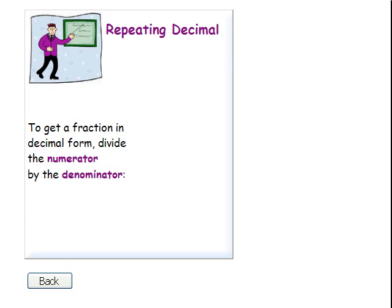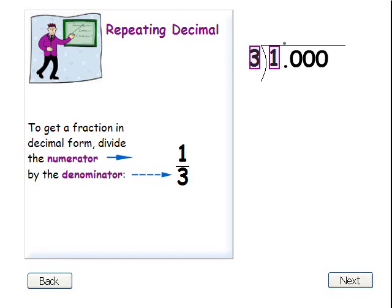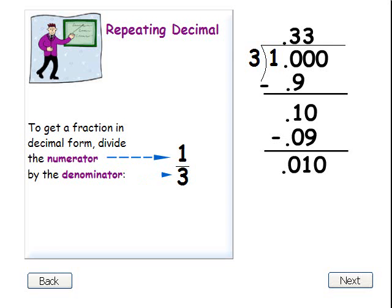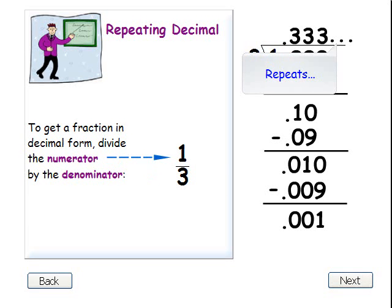Now let's look at a repeating decimal. The fraction one-third repeats when it's in decimal form. To get this fraction in decimal form, divide the numerator, one, by the denominator, three. One divided by three: three times three is nine — subtract. Three times three is nine — subtract. Three times three is nine — subtract. The decimal repeats.